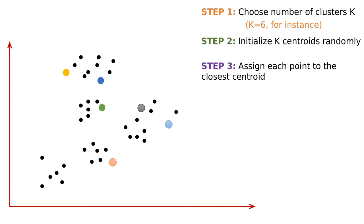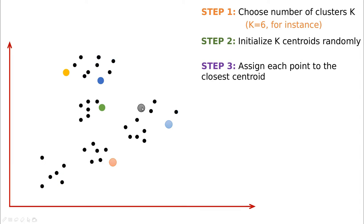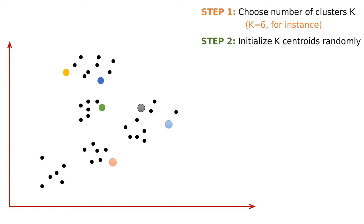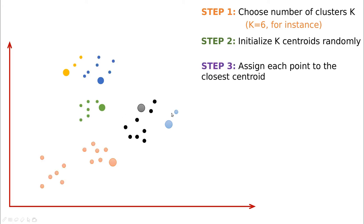Step number three: we're going to assign each point to the closest centroid. As you can see, we're going to color them according to proximity. I'll talk about proximity later in another video because this is not trivial — different definitions of proximity are going to change the outcome. The grayish circle captures the black ones, the blue is over here, the pink ones are around that centroid, and the green, blue, and yellow similarly.